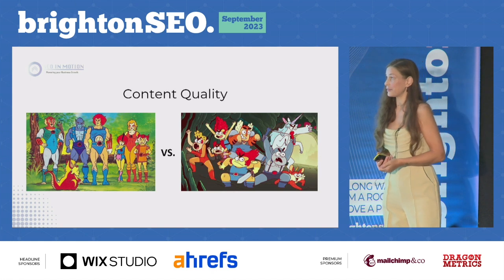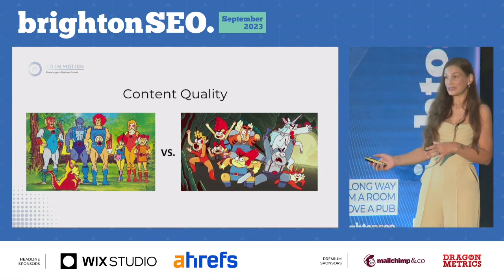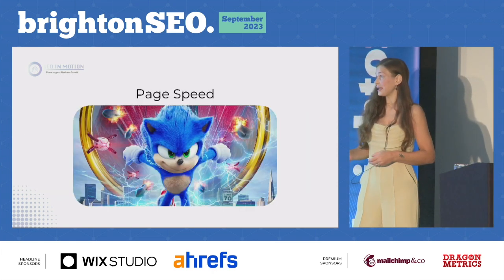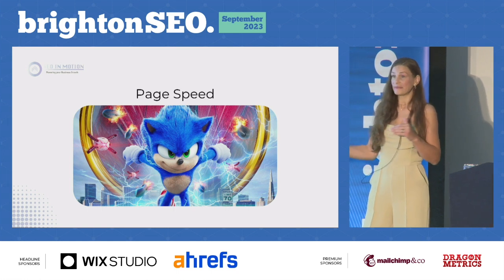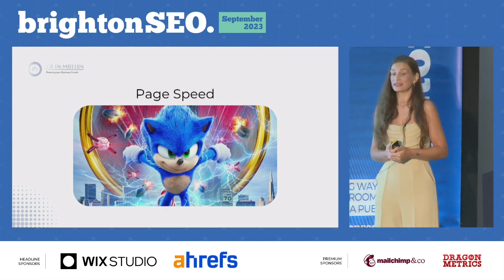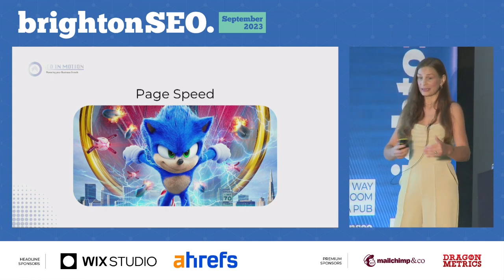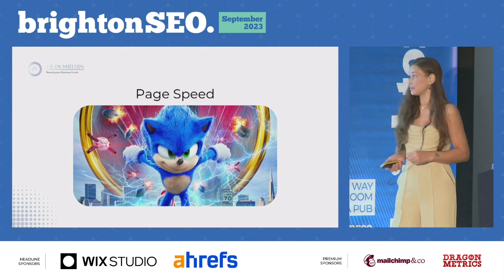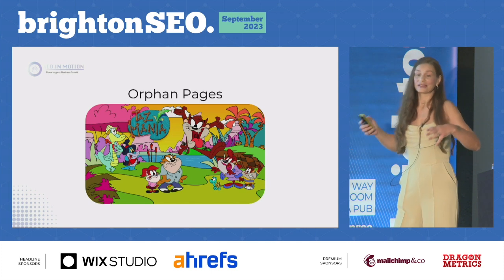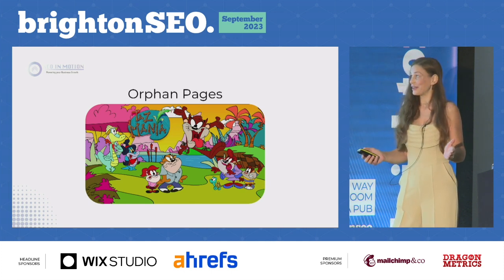Content quality is another big factor. That could be thin content, AI-generated content, or even keyword stuffing. Page speed rarely plays a part in why a page isn't crawled, but if there is an excessive load time, Google's going to figure it's not accessible and move on. And, of course, if there are no links pointing to a page anywhere, search engines aren't going to know that it exists.